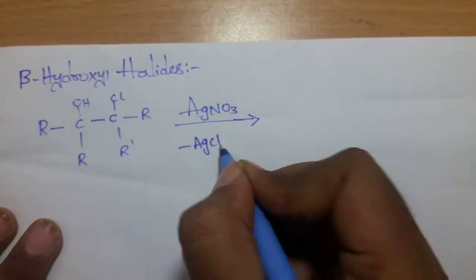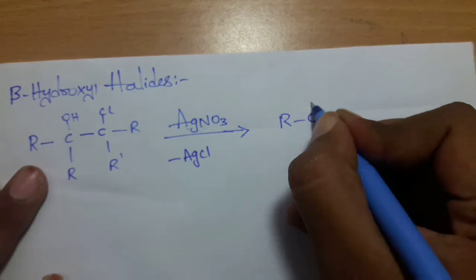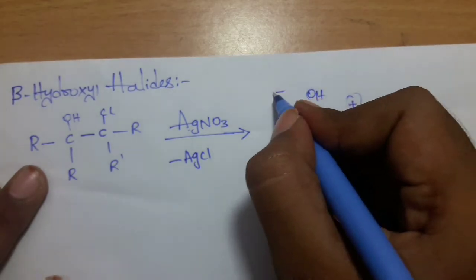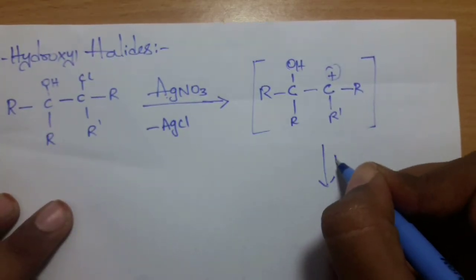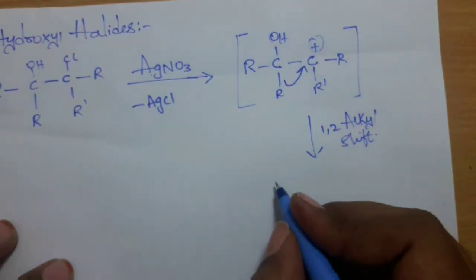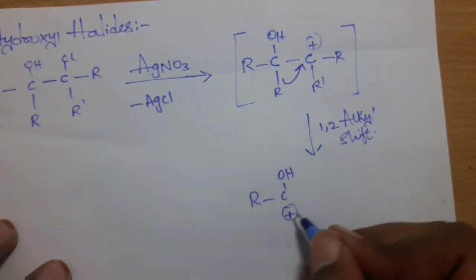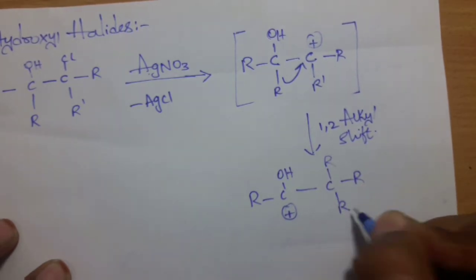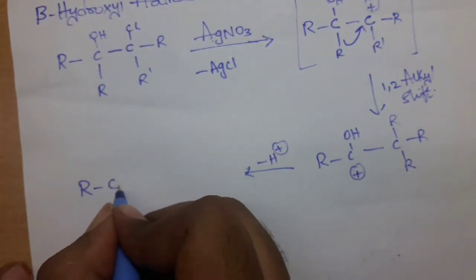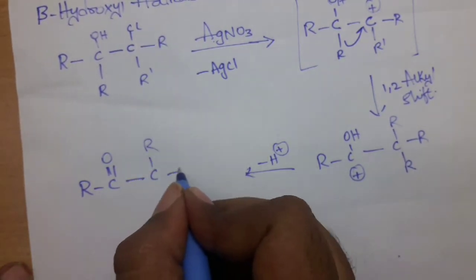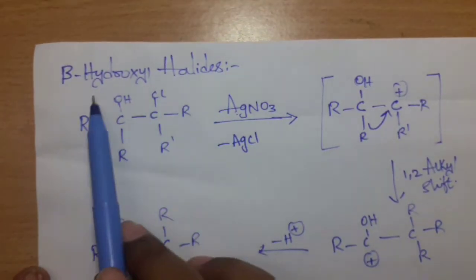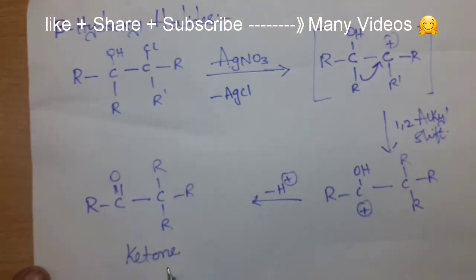This example is beta hydroxy halide. Here we have RCOH — no amine group present. Carbocation forms, then a 1,2-alkyl shift occurs. RCOH acquires a positive charge after the alkyl shift. Immediately, minus H plus — a proton is eliminated. This gives RCOH, and here we have ketone formation — beta hydroxy aldehyde with OH group gives ketone.